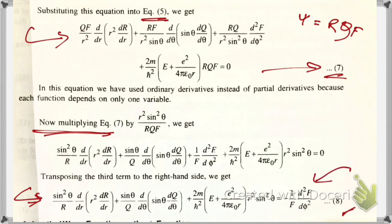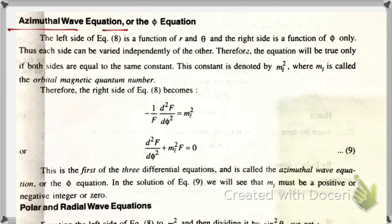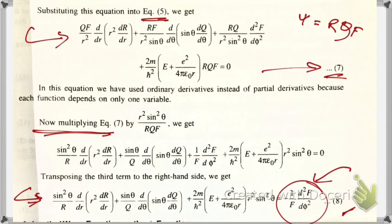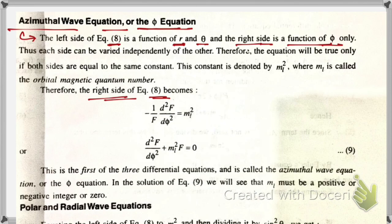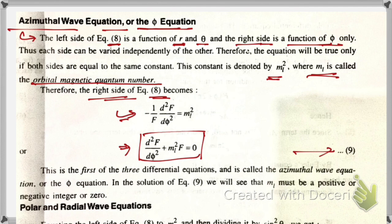The left-hand side of equation eight is a function of r and θ, while the right-hand side is a function of φ only. Therefore both sides must equal the same constant — m_l² — where m_l is the orbital magnetic quantum number. This gives the azimuthal wave equation, or phi equation: d²Φ/dφ² + m_l²Φ = 0, which is the first of the three differential equations.